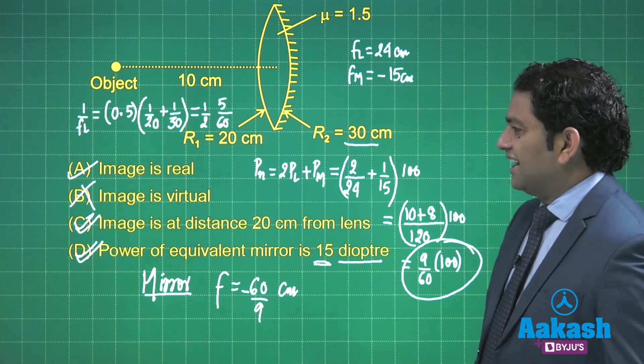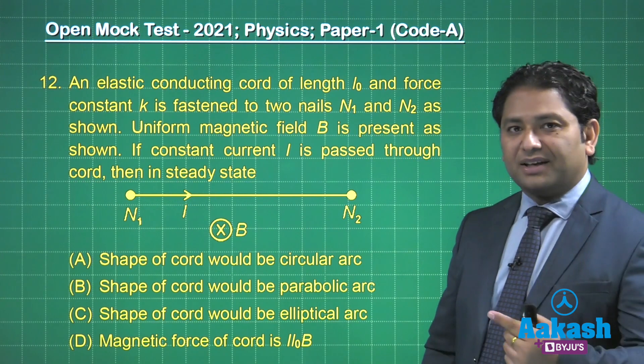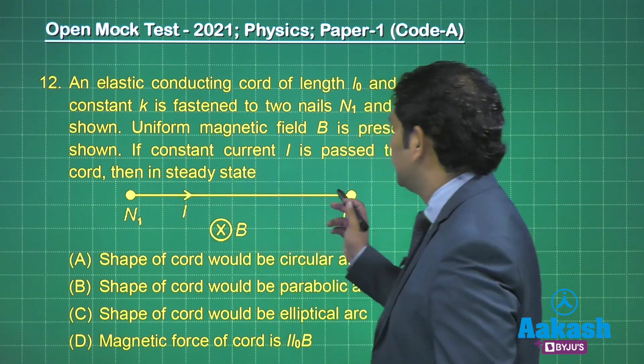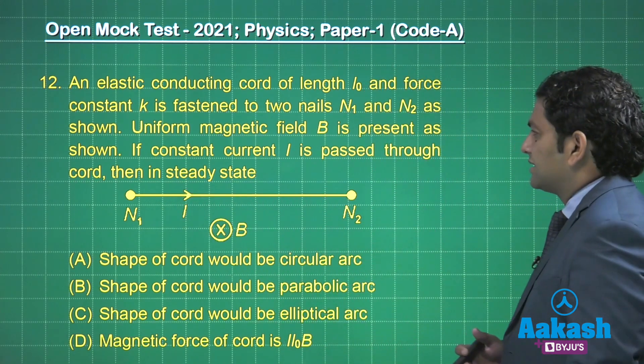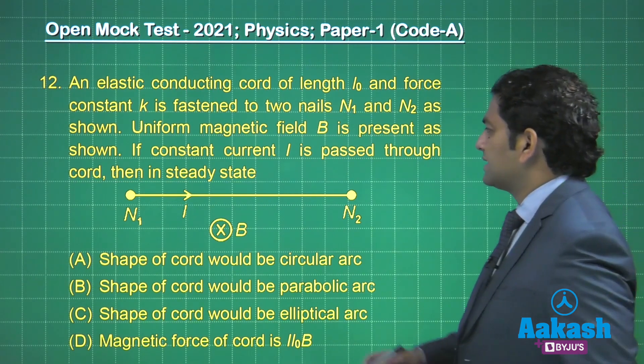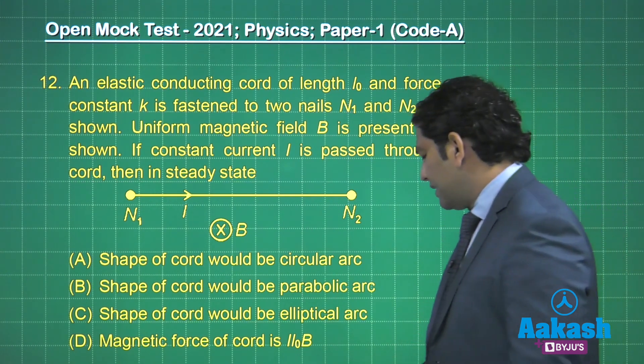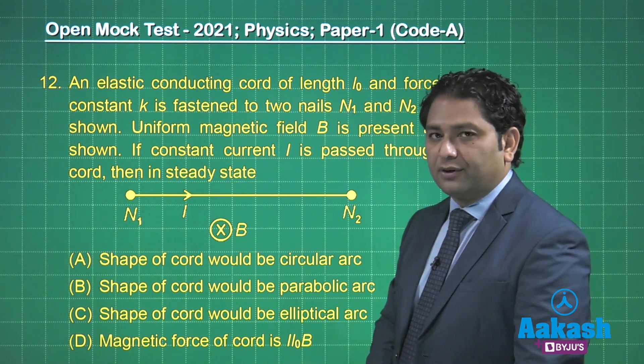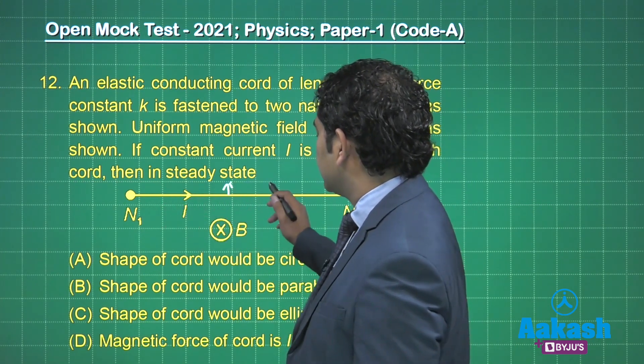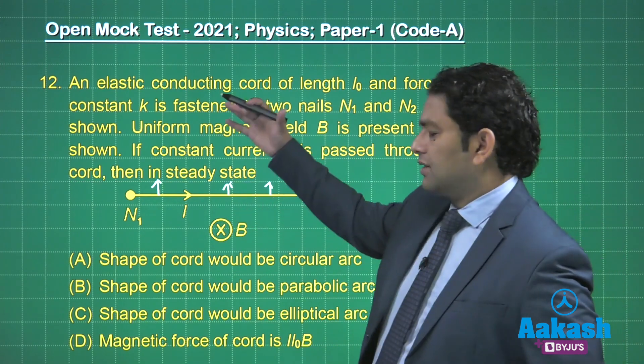All right, let's go for the next one, and this would be a final question of this segment. Multiple option correct. An elastic conducting chord of length l₀, this is that, and force constant k is fastened to two nails N₁ and N₂ as shown. Uniform magnetic field B is present as shown. If a constant current I is passed through the chord, then in steady state, let's see. Now the moment I pass the current, you can see the direction of the force I L cross B. L cross B, the force would initially start in this manner. Every point will get a force in this manner, and eventually this has to convert into the shape of a circle.